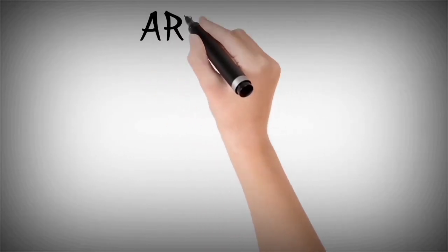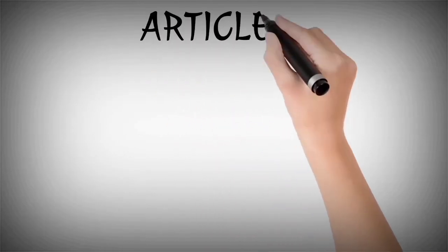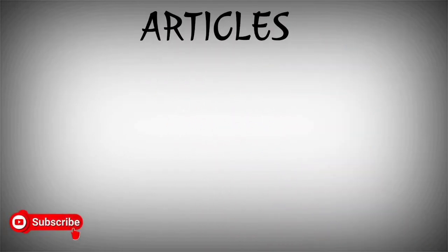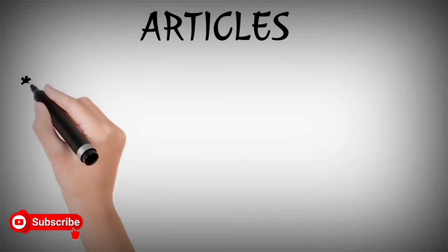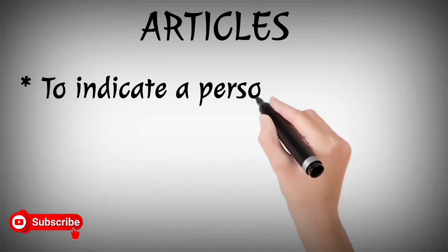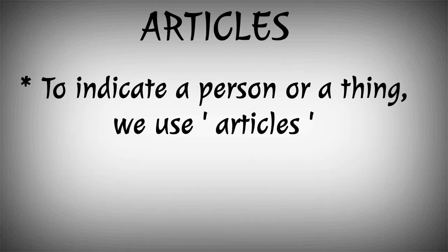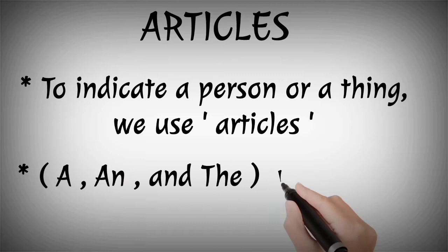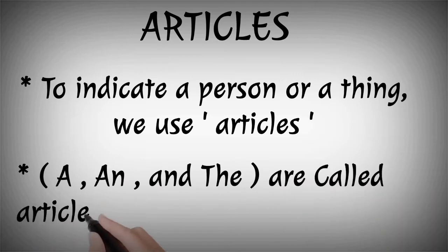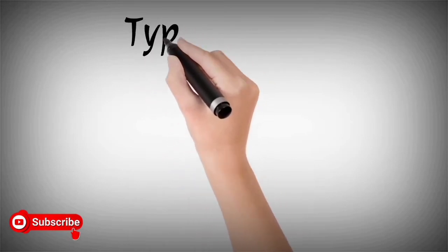So, what do we call articles? Articles are used to indicate a person or things. If we refer to a person or a thing, we use articles. The articles are A, An, and The. We have two types of articles.